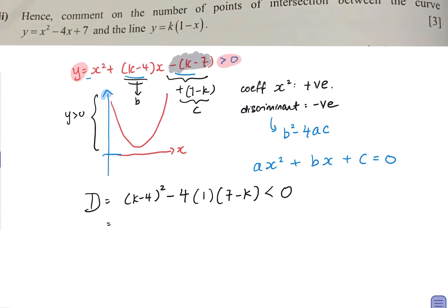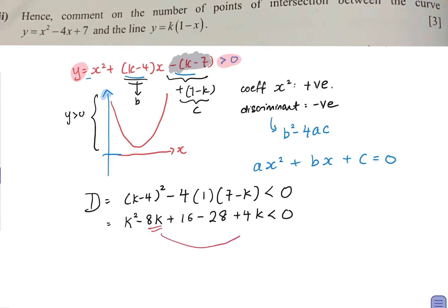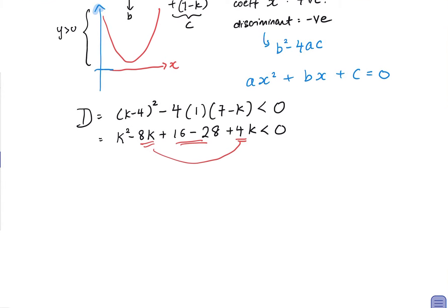Simplifying using the algebraic identity for a minus b bracket squared gives a squared minus 2ab plus b squared. So k minus 4 squared expands, then minus 4 times 1 times 7 minus k gives minus 28 plus 4k. Grouping k squared terms, k terms, and constants, this simplifies to k squared minus 4k minus 12 less than zero.